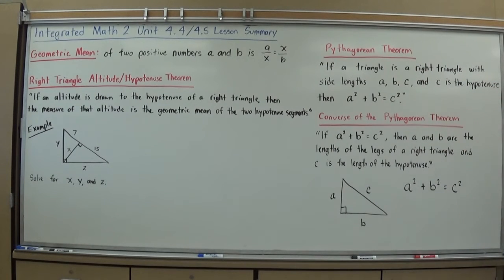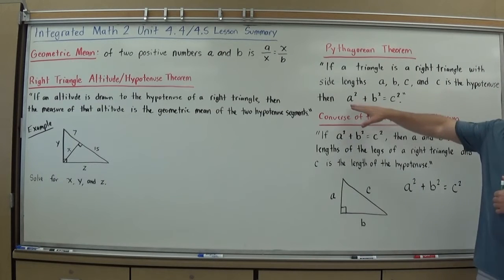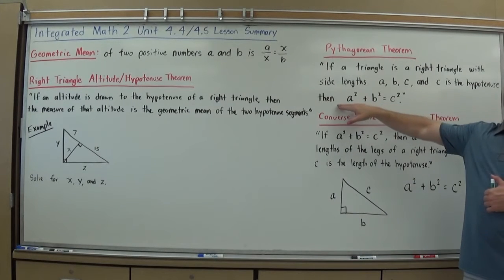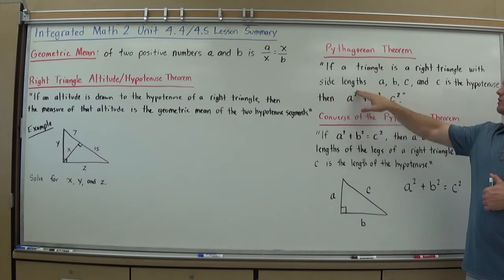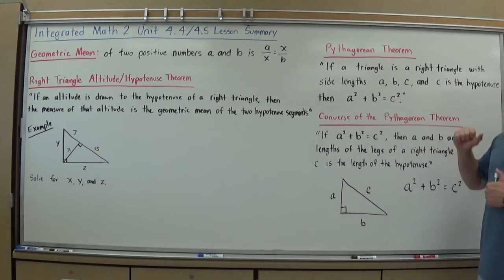The Pythagorean Theorem states that if a triangle is a right triangle with side lengths A, B, C, and C being the longest side, the hypotenuse, then this formula here, this equation here, is always true. The side length A squared plus side length B squared equals C squared. And you've done this before when you were looking at distance formula.